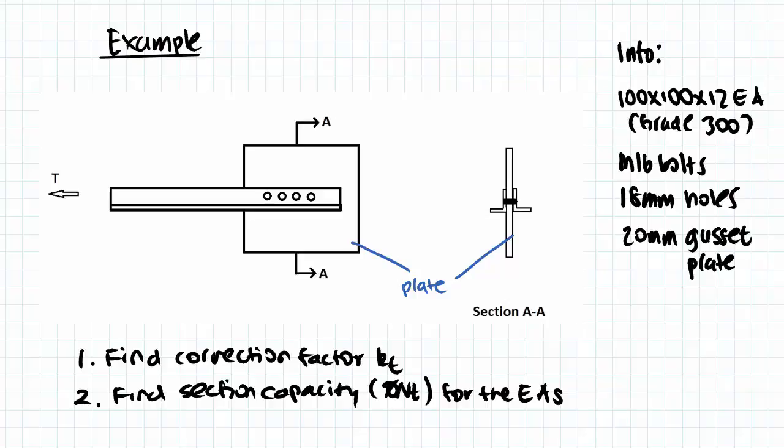Now this configuration involves two equal angles, both of which are 100 times 100 times 12 and are grade 300. Both these equal angles are connected through a single gusset plate of 20 millimeter thickness, and the connection used is an M16 bolt through an 18 millimeter diameter hole through the whole section.